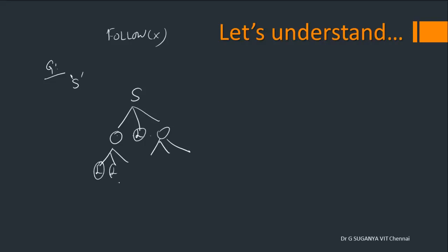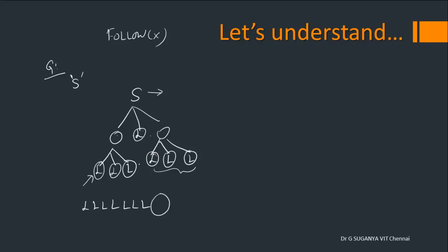We try to expand S with some productions and expand further until we reach leaf nodes. What is followed after S? S is the start symbol, which generates a word — L followed by more symbols. Any word derived from this grammar ends with a delimiter. In standard convention we say dollar '$' is the delimiter or end marker. So the start symbol, once expanded to generate a word, will end with dollar. Hence, FOLLOW of S will have dollar.